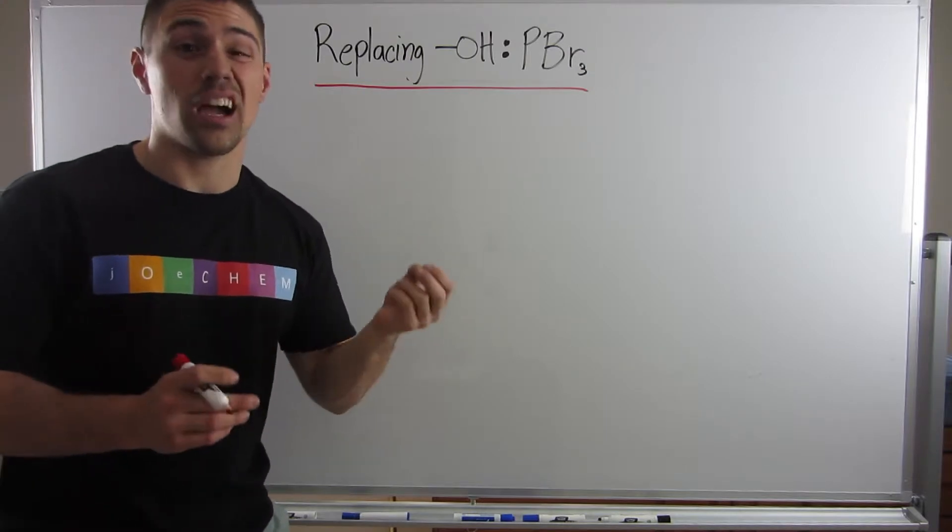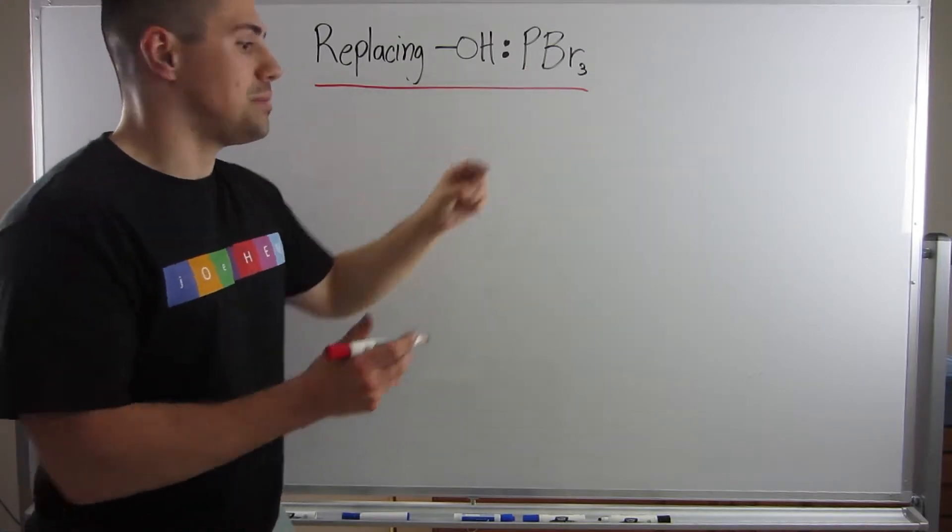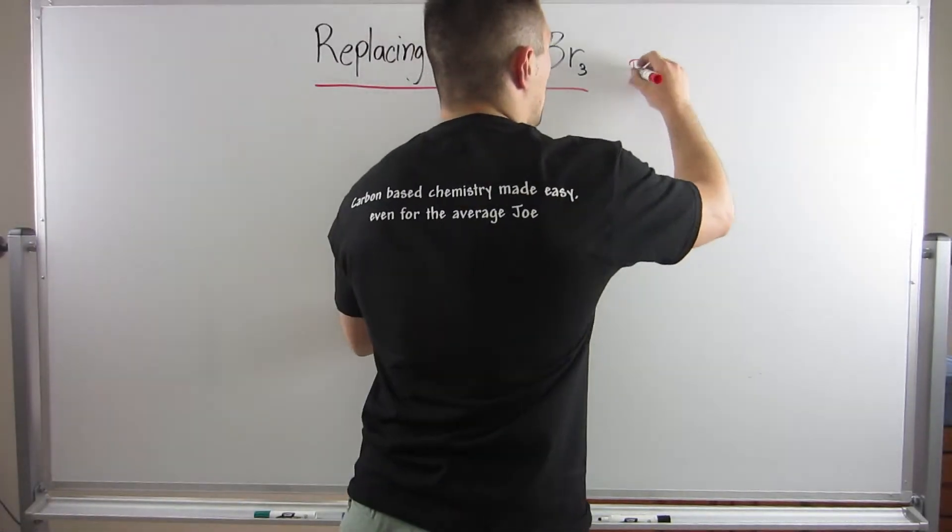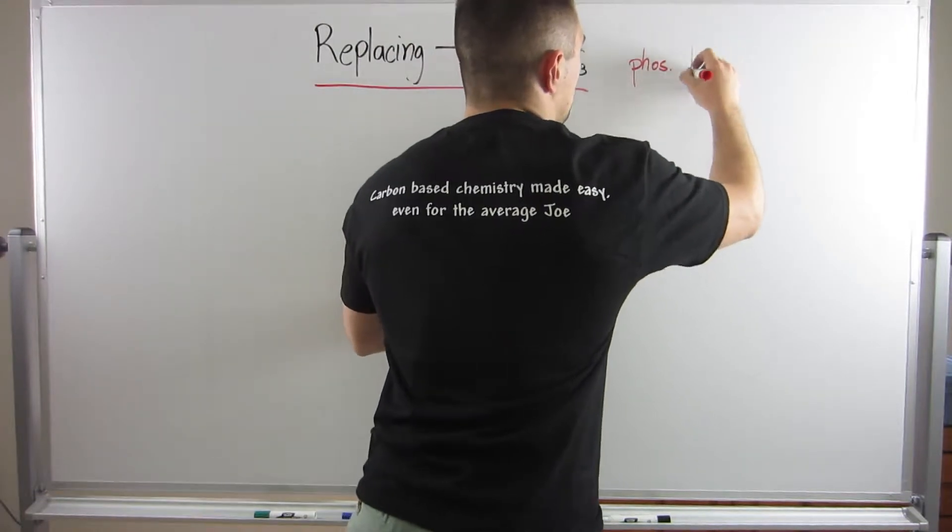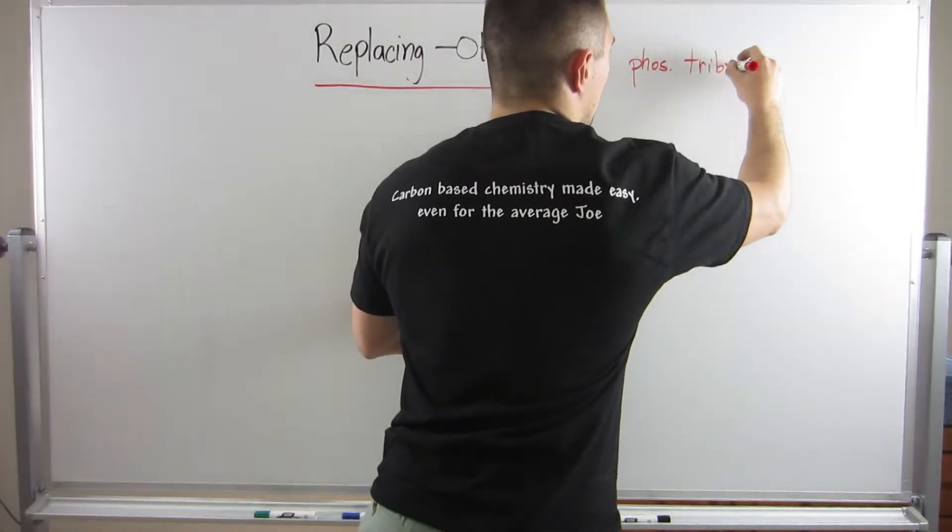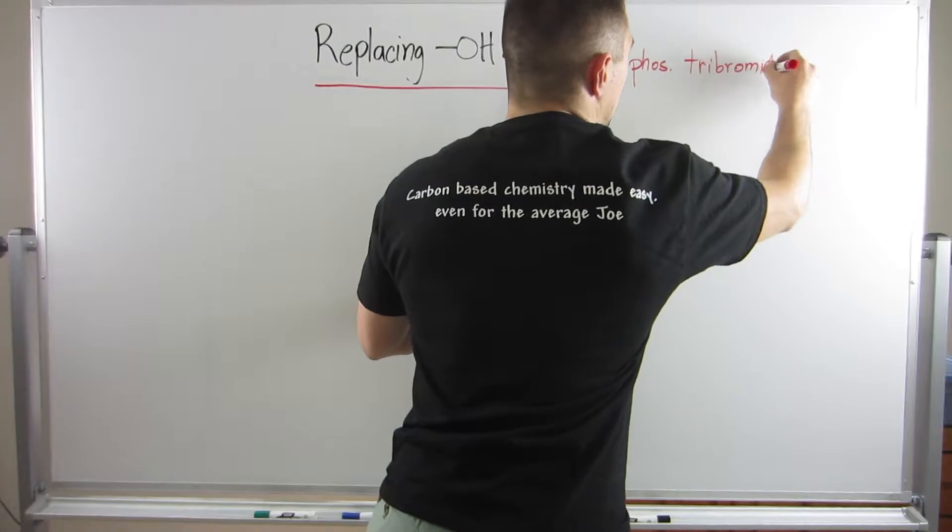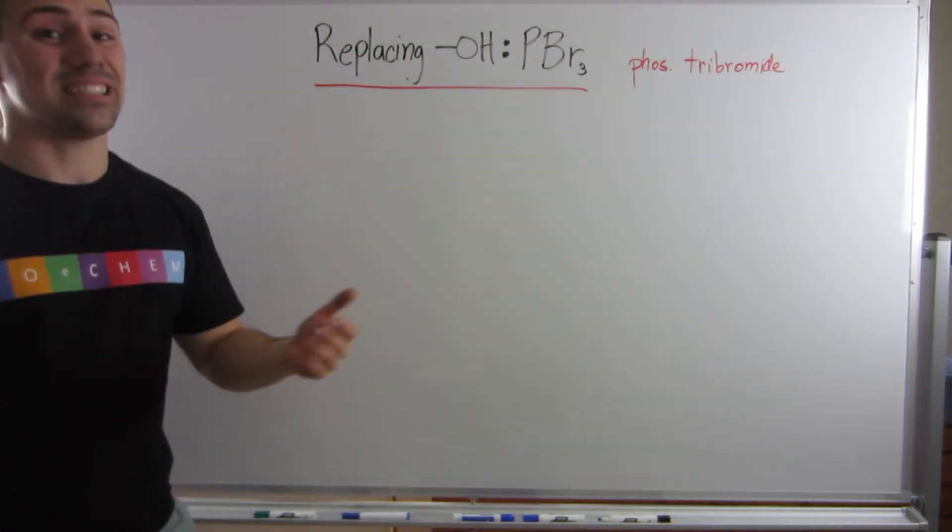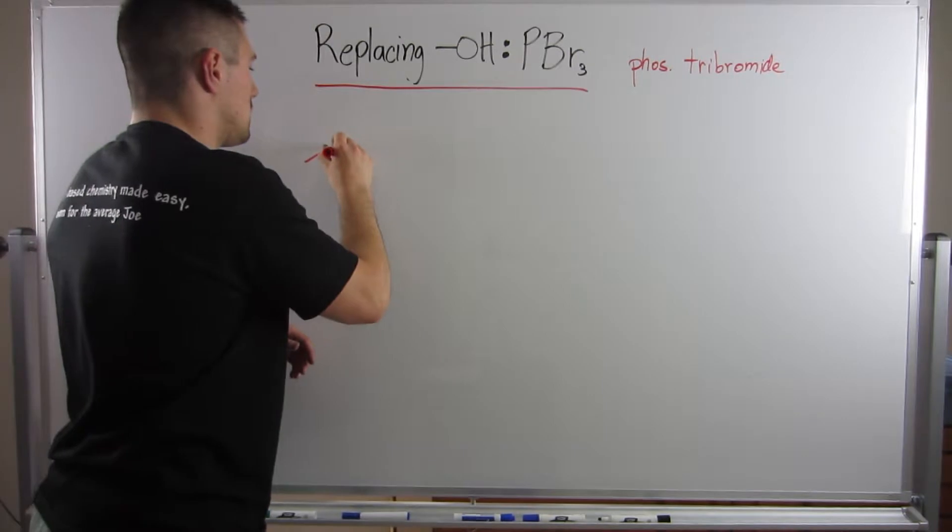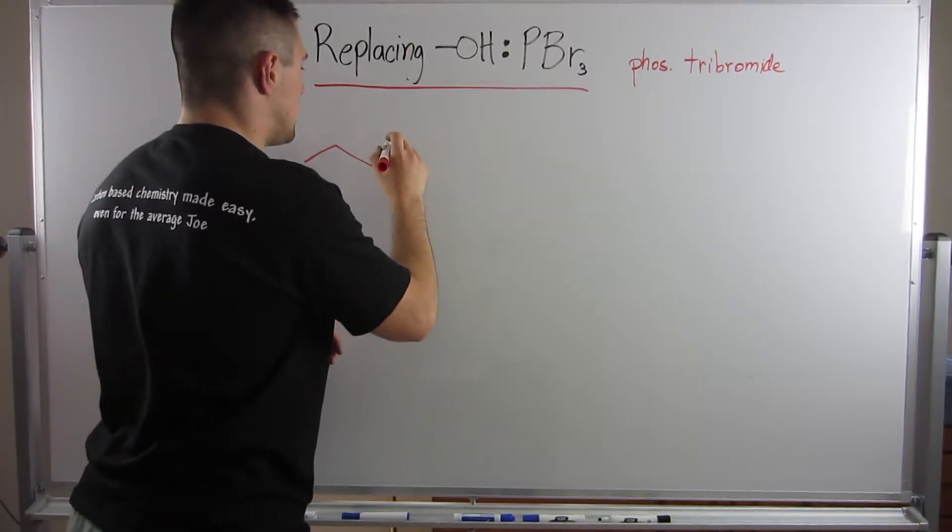Instead of SOCl2, that thionyl chloride, we're going to be using PBr3, your phosphorus tribromide. Okay, so no big deal. This mechanism, like I said in the last video, is actually shorter. This is a piece of cake.